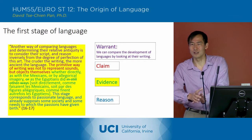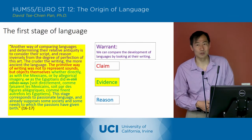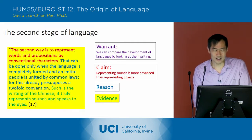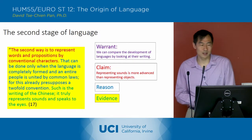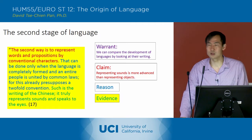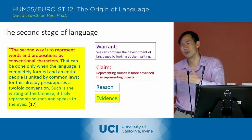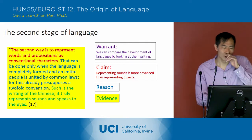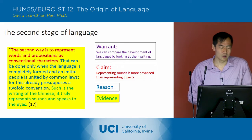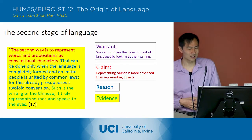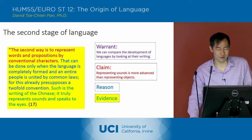He sees that as a simpler way of doing things — having these signs refer to objects. So that's the first stage of language. Then he goes to the second stage and says the second way is to represent words and propositions by conventional characters. Instead of having a sign refer to an object, the signs now represent words and propositions — and in fact, they represent sounds.